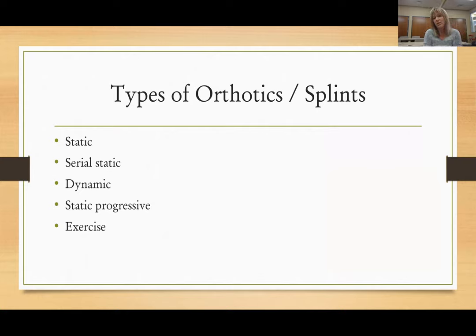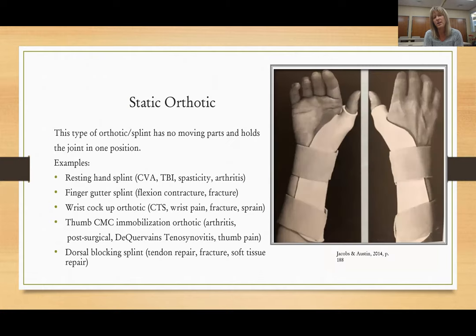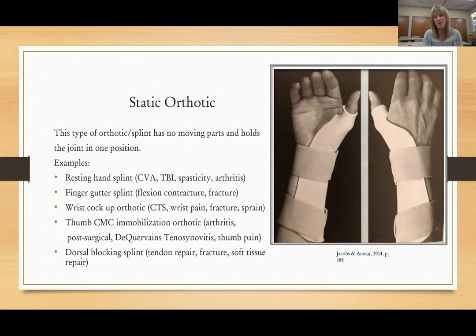Types of orthotics and splints: there is static, serial static, dynamic, static progressive, and exercise splints. The first is a static orthotic. This type of orthotic has no moving parts and holds a joint or extremity in one position. Some examples include a resting hand splint for someone with a CVA or TBI due to spasticity, or arthritis to protect a joint and allow inflammation to decrease.